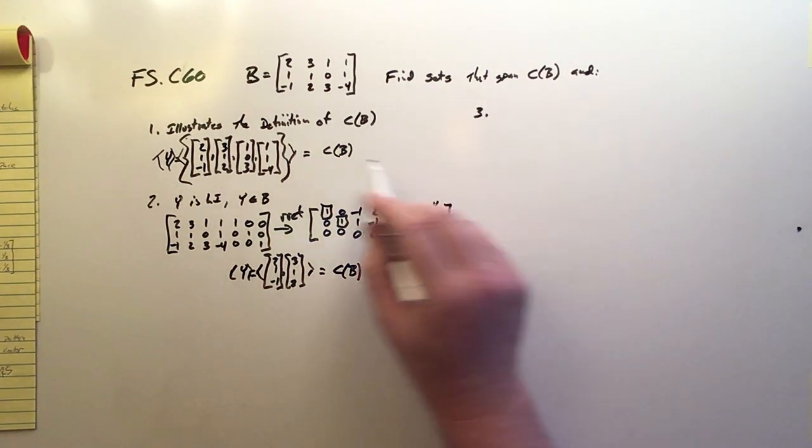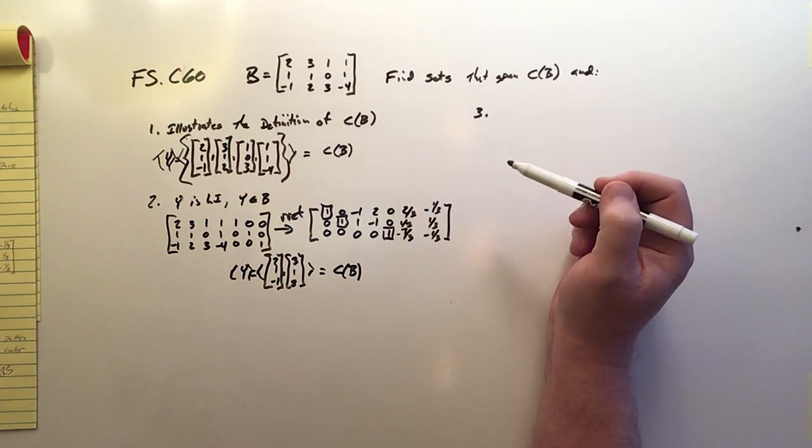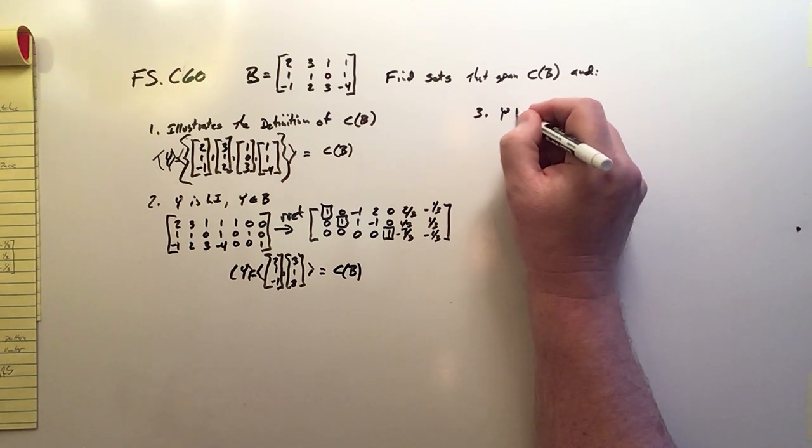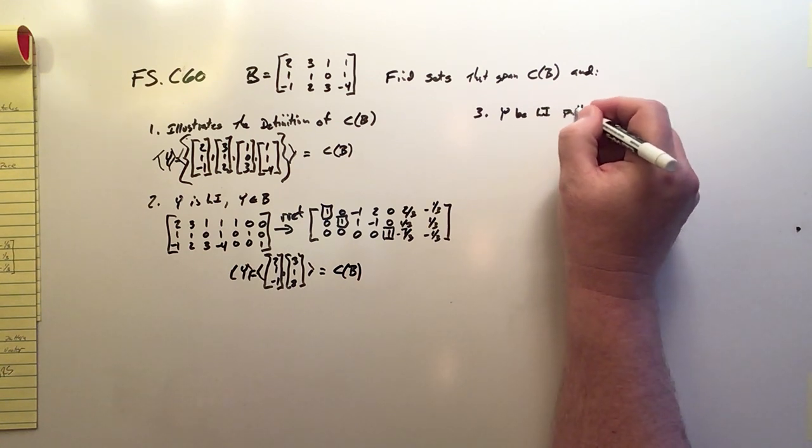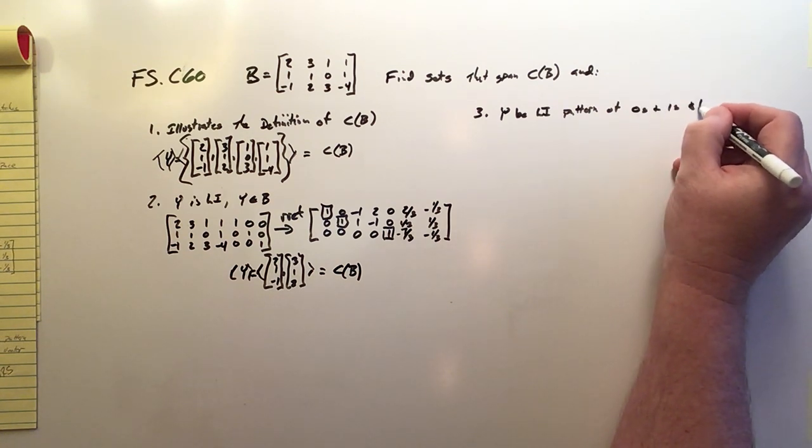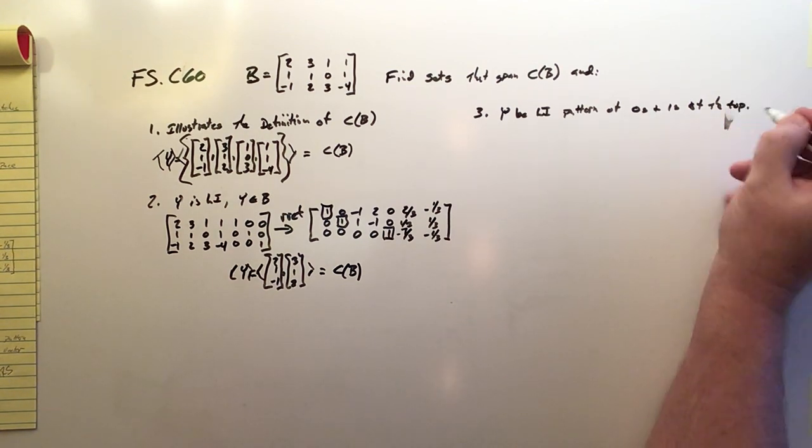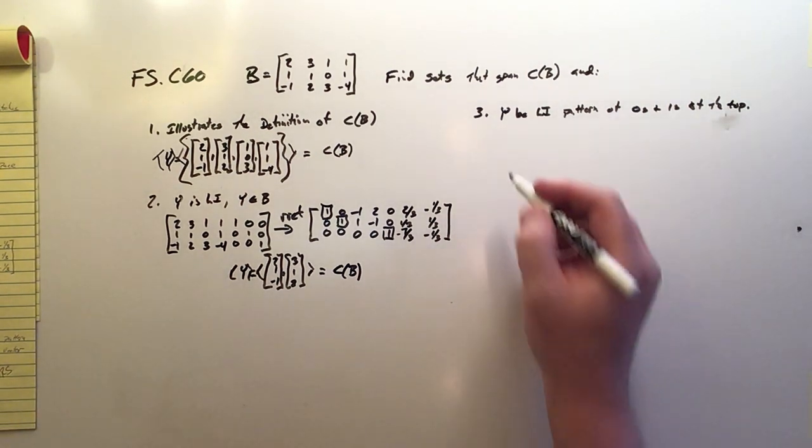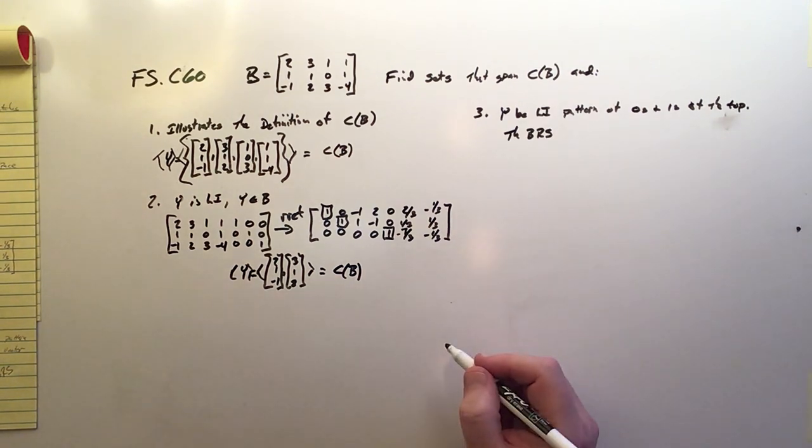Okay. For number three, the third criteria we want to meet in addition to spanning the column space is we want it to be linearly independent, and then we want a pattern of zeros and ones at the top of each vector. So we want Y to once again be linearly independent, and we want a pattern of zeros and ones at the top. And of course we can get this by using theorem BRS. That's what we're going to use. So theorem BRS, which is the basis of the row space.